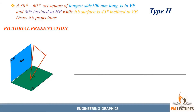The first step is to check whether surface inclination is given. If the surface inclination is given, we draw the initial position accordingly. If it is inclined to VP, we draw the plane parallel to VP so that we get the true shape in the VP and can see it in the front view. The set square is given with 100 mm as the longest side, which will be in VP.